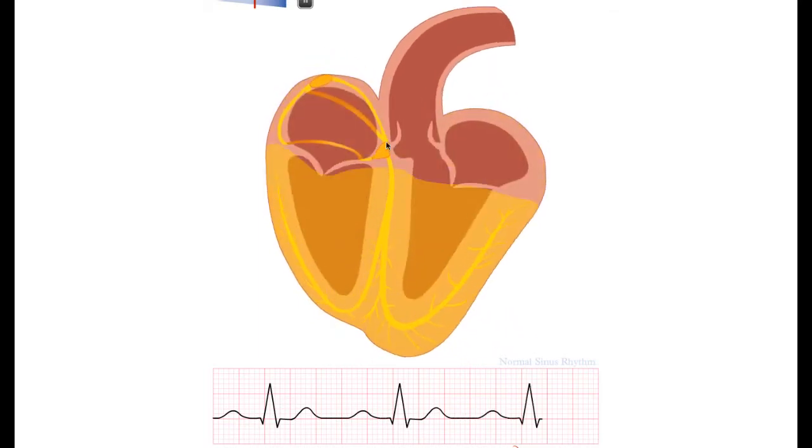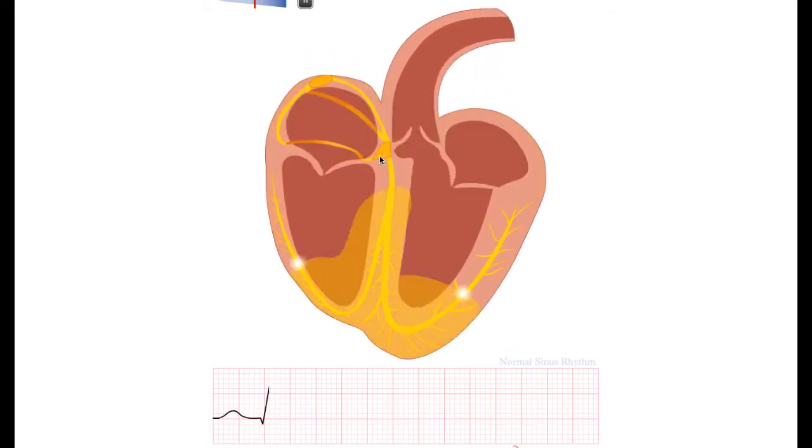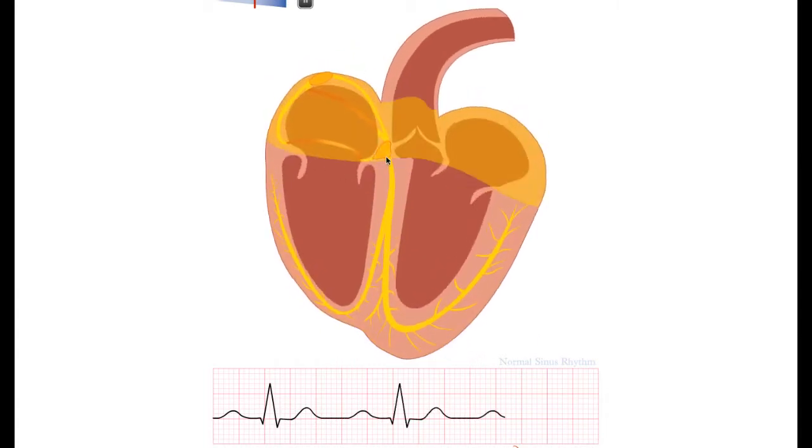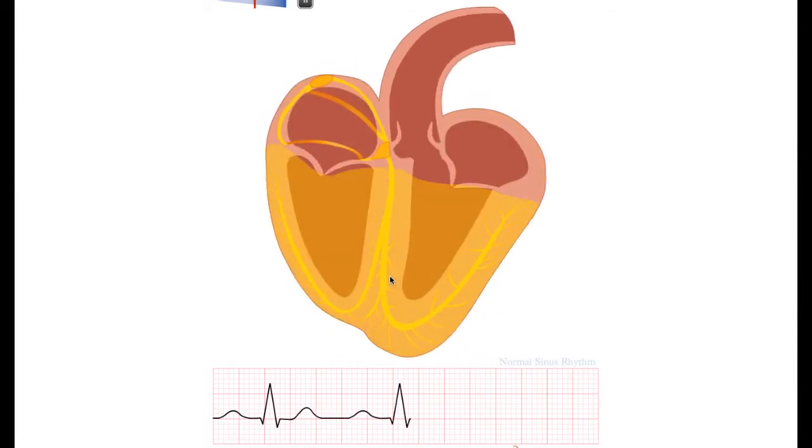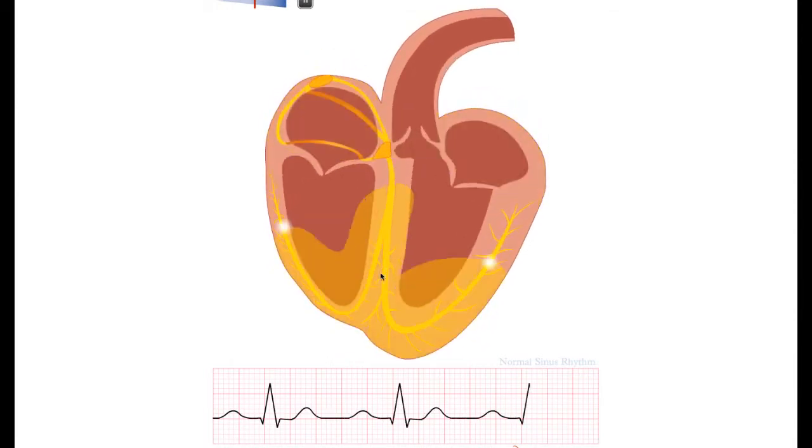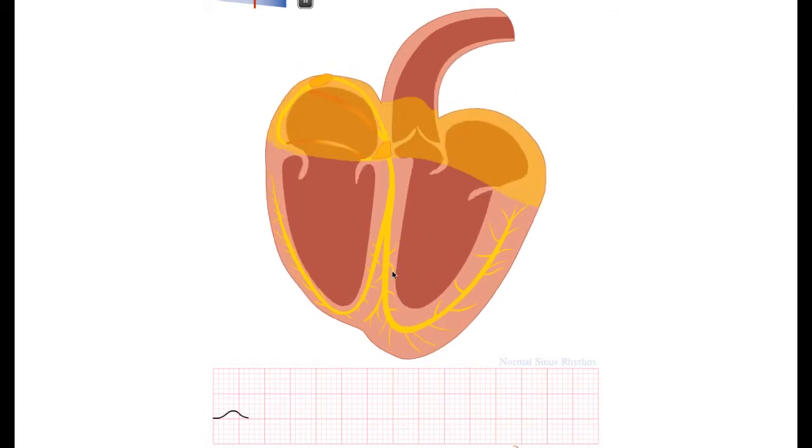And goes to the AV node, which results in a small delay in cardiac electrical conduction. Then it actually jumps to the apical septum on the left side.